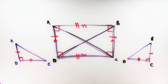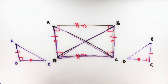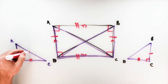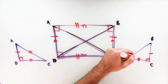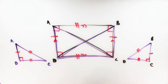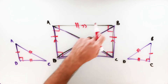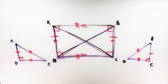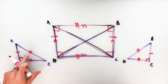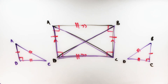Since the triangles are congruent by Side-Angle-Side, any other corresponding parts must also be congruent by CPCTC. That means diagonal AC and diagonal BD have to be equal — those are the hypotenuses of those two right triangles. This proves our property that the diagonals of any rectangle must be congruent.